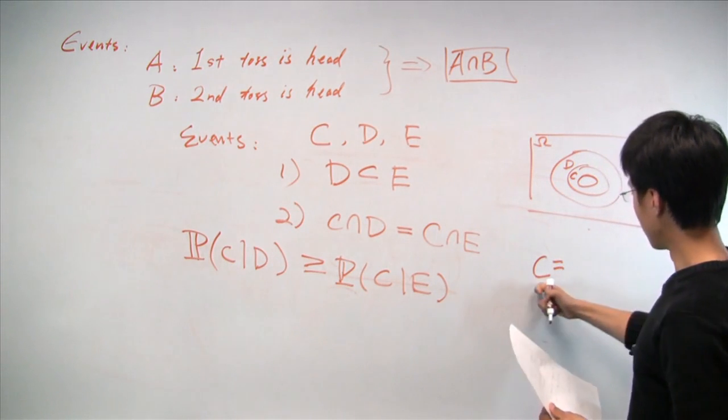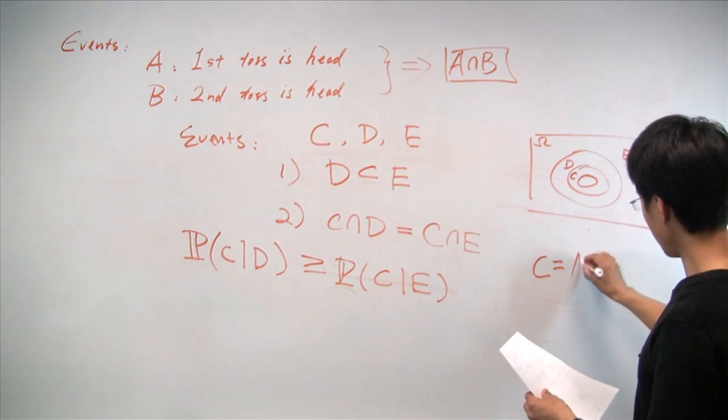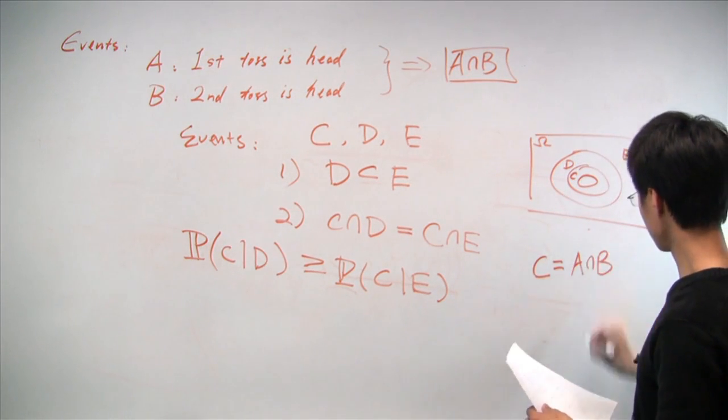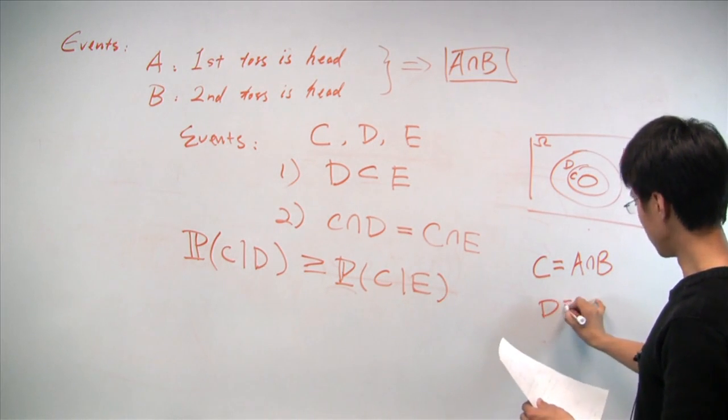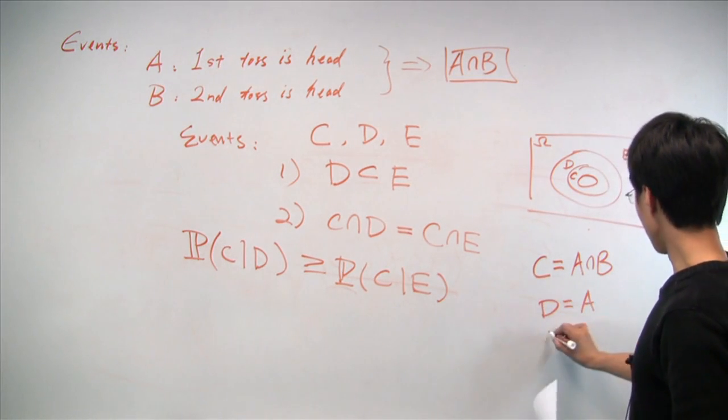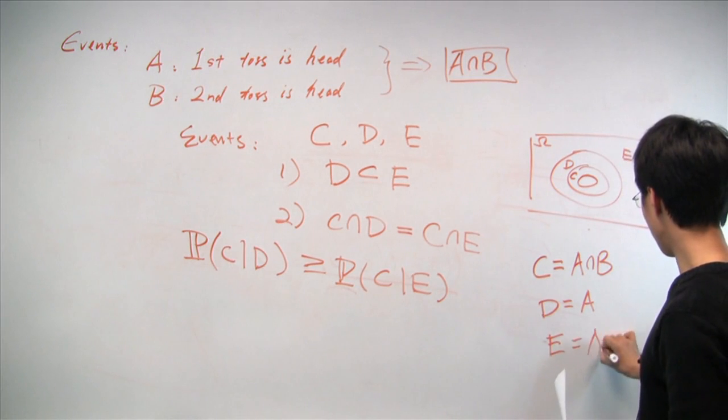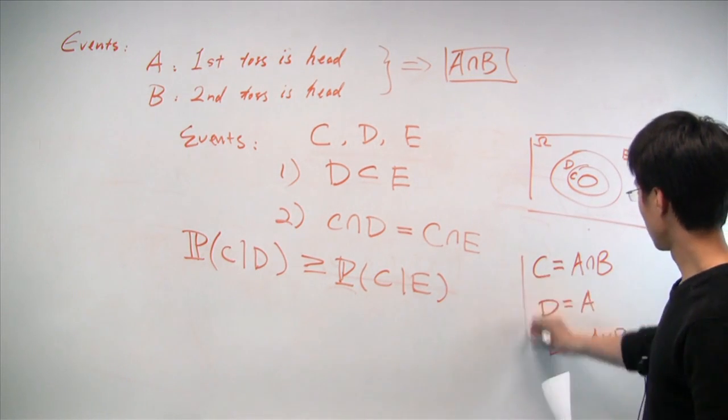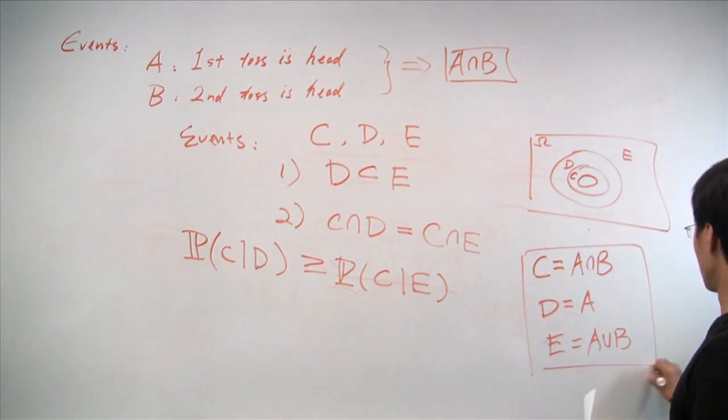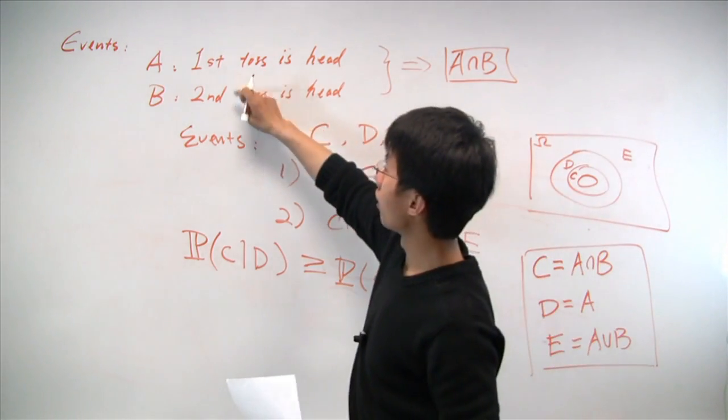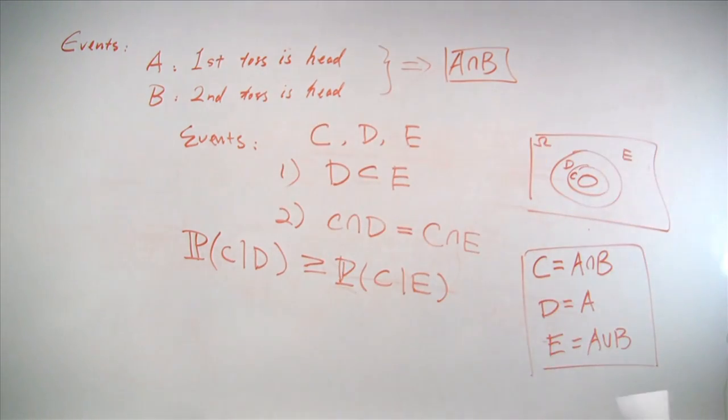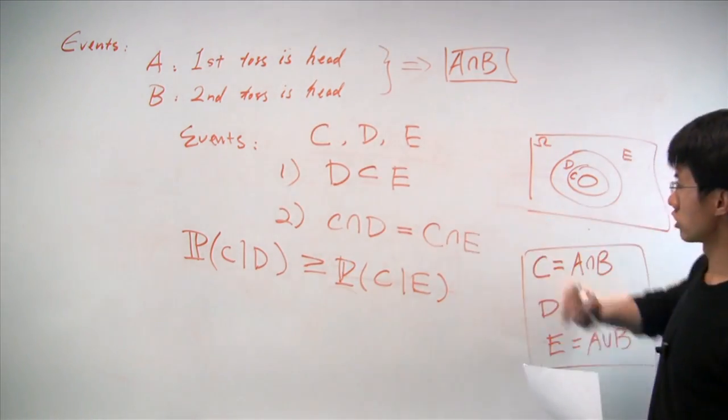in fact, if we say we let C be the event A intersection B, D be the event A, and E be the event A and B, where A and B are the events that we defined earlier.